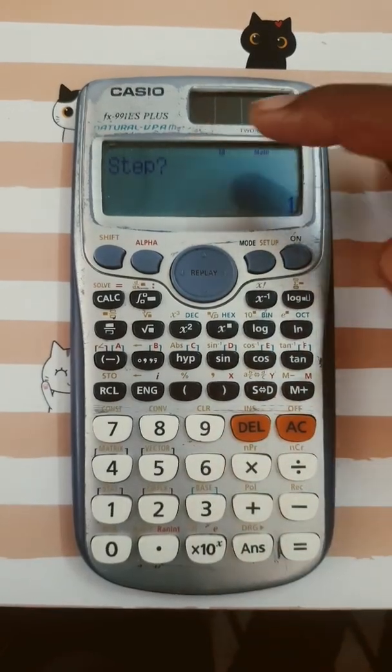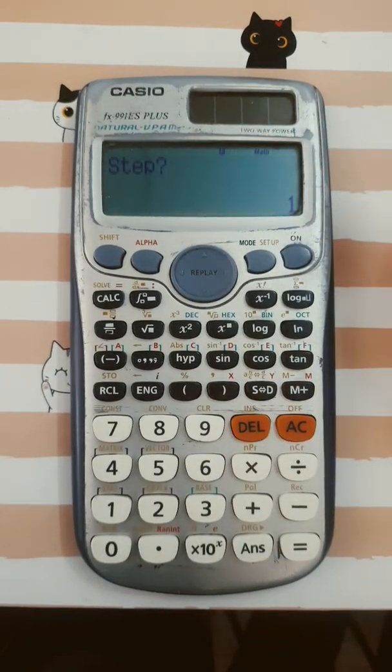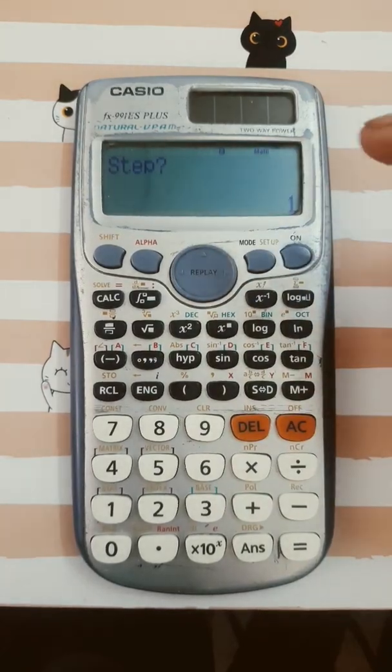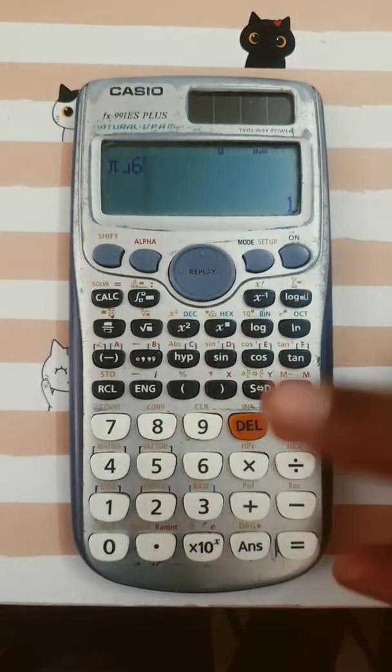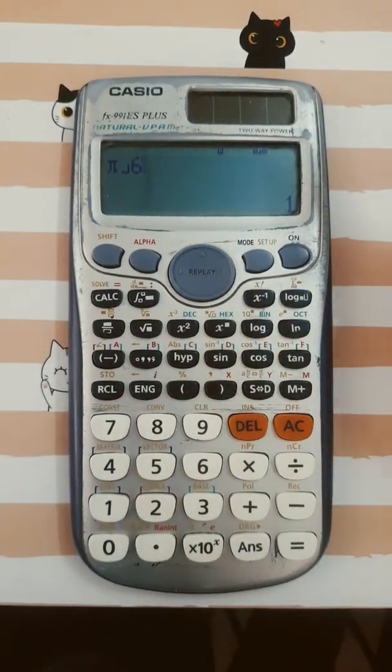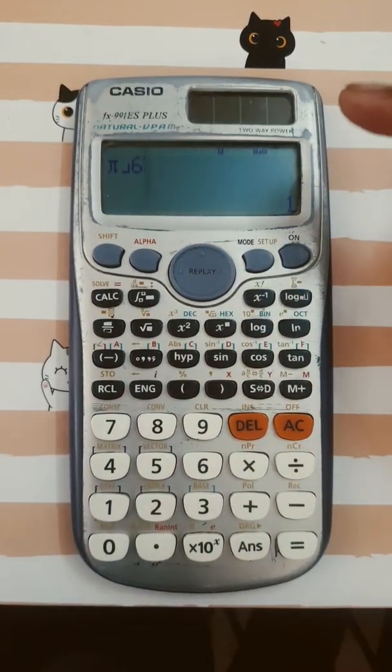Then it is asking for steps. For steps, if you are going to write the equation sine 3x, then you have to divide π/2 by 3, that is π/6. So you have to write here π/6. If you have the equation cos 2x or sine 2x, then n is 2, so you have to divide π/2 by 2, so the step will be π/4. This way.